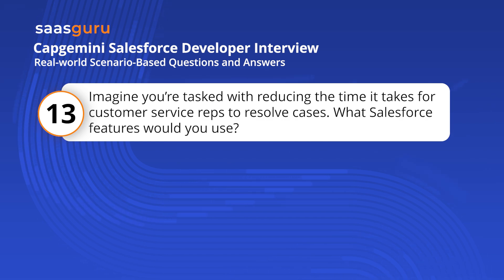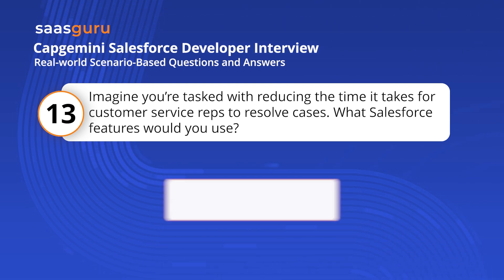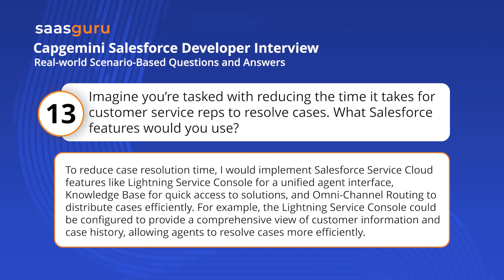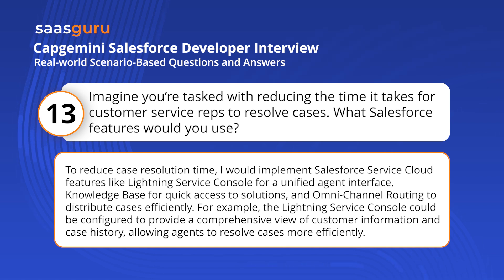Imagine you're tasked with reducing the time it takes for customer service reps to resolve cases. What Salesforce features would you use? To reduce case resolution time, I would implement Salesforce Service Cloud features like Lightning Service Console for a unified agent interface, a knowledge base for quick access to solutions, and omni-channel routing to distribute cases efficiently. The Lightning Service Console could be configured to provide a comprehensive view of customer information and case history, allowing agents to resolve cases more efficiently.